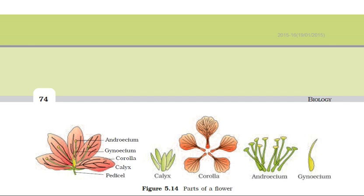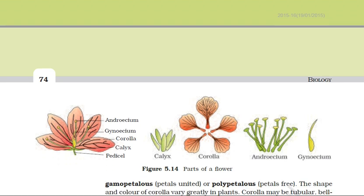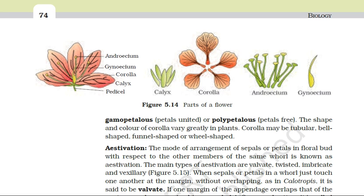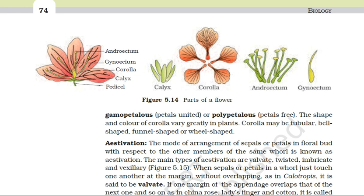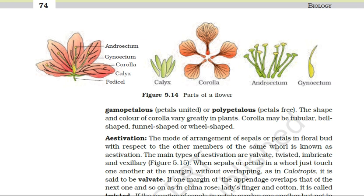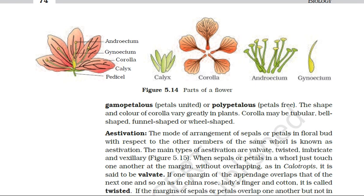Now we move on to the next topic, that is estivation. The mode of arrangement of sepals or petals with respect to the other members of the same whorl is termed as estivation. Or you can say, the arrangement of sepals or petals in relation to one another in the bud condition is termed as estivation. The types of estivation are: valvate, twisted, imbricate, and vexillary.